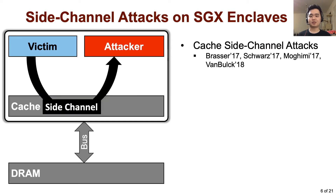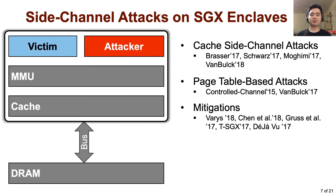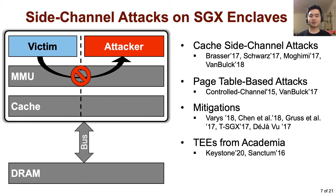For example, cache side-channel attacks use shared last-level cache. Page-table-based attacks, such as control-channel attacks or flush-based cache side-channel attacks, use an adversarial MMU managed by the untrusted OS as a side channel. Unfortunately, both are even more powerful than typical side-channel attacks because of the strong threat model. A lot of mitigation techniques have been proposed, using existing hardware or additional software to fully partition shared resources or conceal data-dependent state changes. There are also TEEs from academia which redesigned the entire system to fully isolate resources such as page-table cache to fundamentally defeat side-channels.